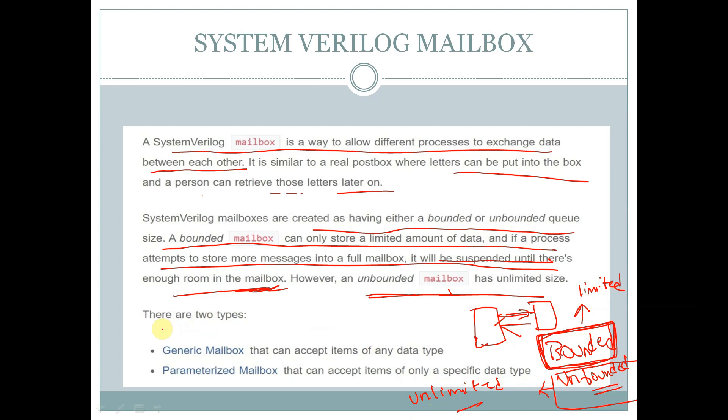A mailbox is of two types: one is generic mailbox and the other is parameterized mailbox. A generic mailbox can accept items of any data type, whereas a parameterized mailbox can accept items of only a specified data type.